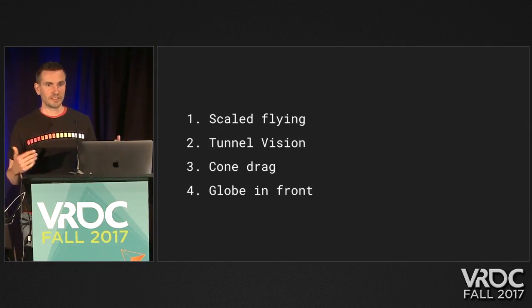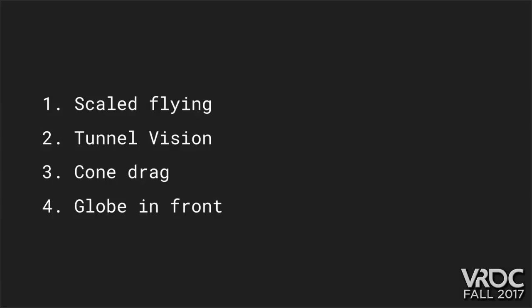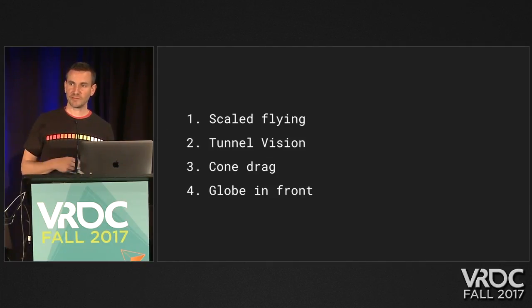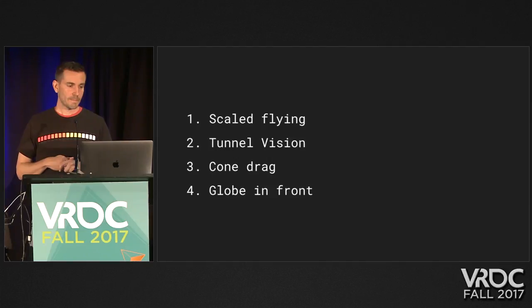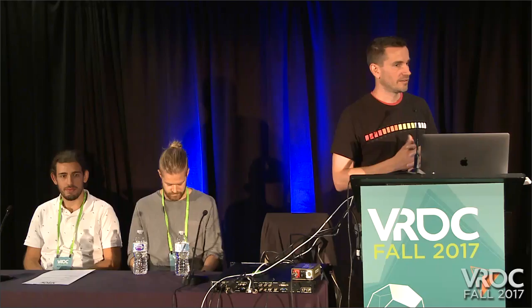To summarize: if you're going to take four things away — scaled flying worked the best, meaning scaling the user and keeping their feet on the ground with smooth movement. That only works well coupled with tunnel vision; about 5% of users can turn it off without feeling sick, but the rest need it. If you're doing dragging at different elevations, cone drag is the way to go. And putting the globe in front of users is really important for navigation. Once we had all this implemented, it technically worked, but it didn't feel as great as we wanted, so I'll introduce Per to talk about that.